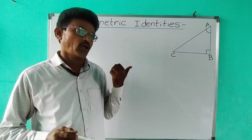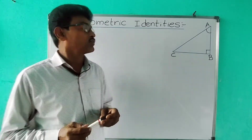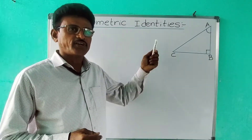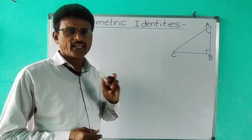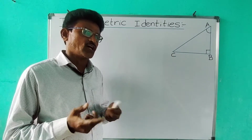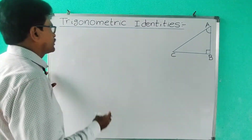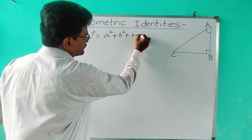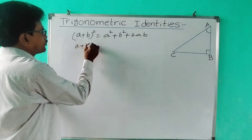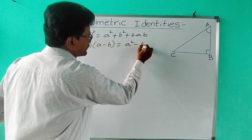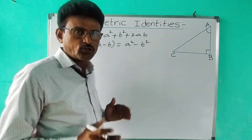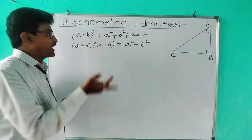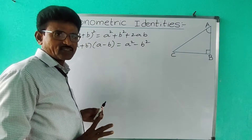Hello students, this is the seventh video on trigonometry. Today I am going to explain about trigonometric identities, which is a very important part of the trigonometry chapter. An identity is a mathematical equation which is true for all values of the variables. For example, (a+b)² = a² + b² + 2ab, and (a+b)(a-b) = a² - b². These are identities because for any value of a and b, we get LHS equal to RHS.